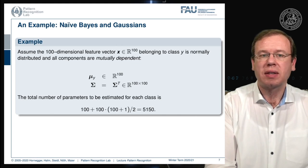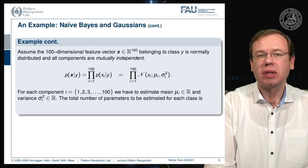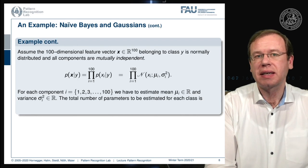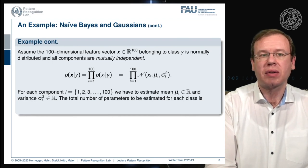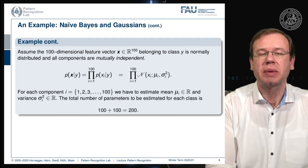This gives a total number of unknowns of 5150. Now, if we assume mutual independence, we still need a mean vector with 100 components, but we can break down the covariance matrix and only estimate a single variance for every component of the vector. This much simpler version brings us down to only 100 plus 100 unknowns that need to be estimated — a significant reduction in parameters.